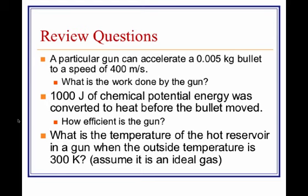Here are a couple of review questions, and they're all related together. A particular gun can accelerate a 0.005 kilogram or 5 gram bullet to a speed of 400 meters per second. What is the work done by the gun? Think back to energy and how you change the kinetic energy of something. Next, 1,000 joules of chemical potential energy was converted to heat before the bullet moved. This is like the firing, the expansion of the gas and the burning, the combustion inside there.